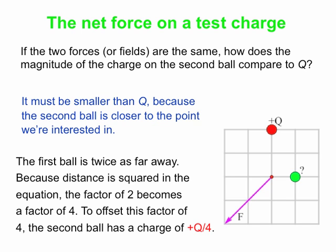Qualitatively, the first ball is twice as far away, and remember the distance gets squared in our force or field equation — KQ over R squared. So that factor of two in the distance becomes a factor of four. You've got to offset that factor of four with a factor of four in the charge. So the green ball must have a charge of Q over four. I think that's all for today.